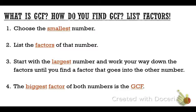How do you find the GCF? The way we're going to do that is by listing factors. Step one: choose the smallest number. Step two: list the factors of that number. Step three: start with the largest factor and work your way down until you find a factor that goes into the other number also. And finally, the biggest factor of both numbers is the GCF.